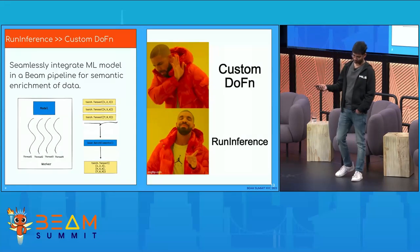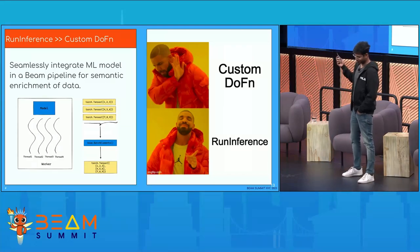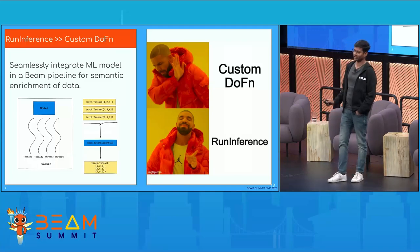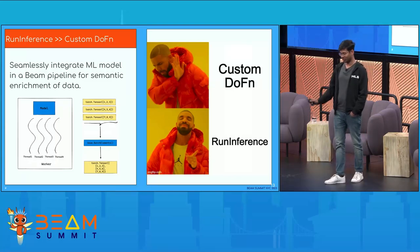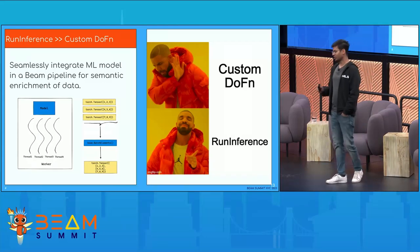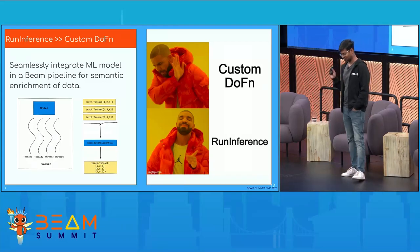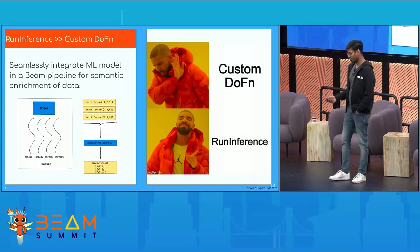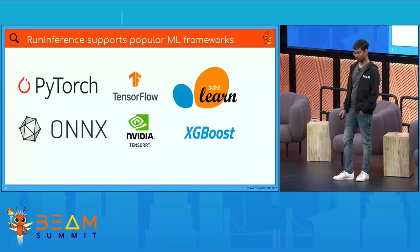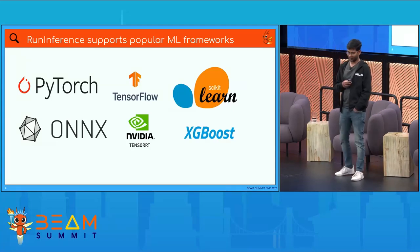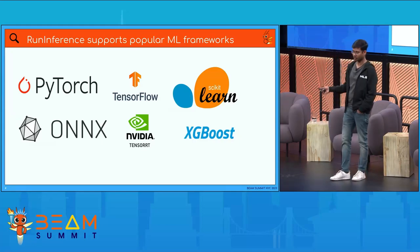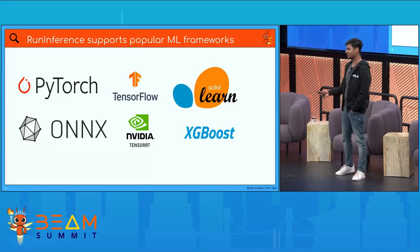Imagine a developer who wants to use machine learning in a Beam pipeline. Writing a DoFn means you have to handle a lot of things — batching, error handling, metrics, making sure the model is shared across worker threads. With RunInference, you don't have to worry at all. You do it with a single transform, just providing some basic configurations and parameters. RunInference also supports all popular machine learning frameworks: PyTorch, TensorFlow, scikit-learn, NVIDIA — you name it, they have it.